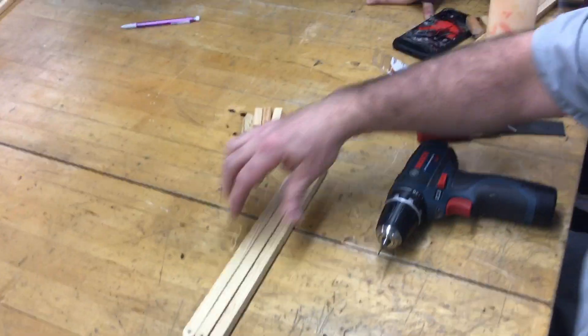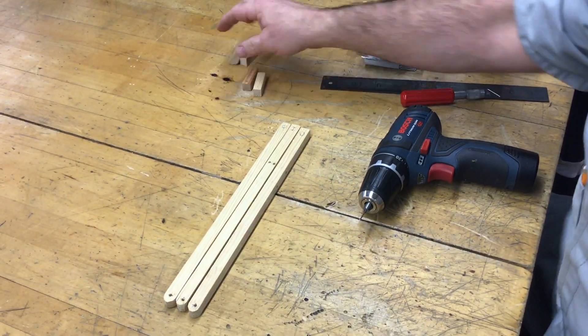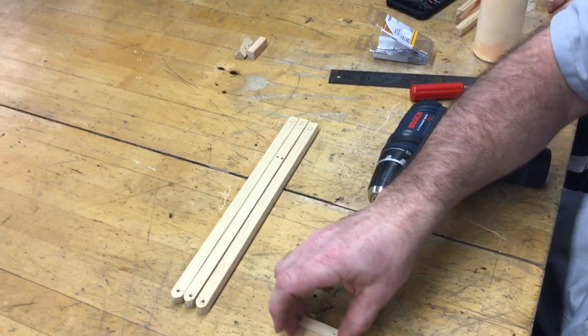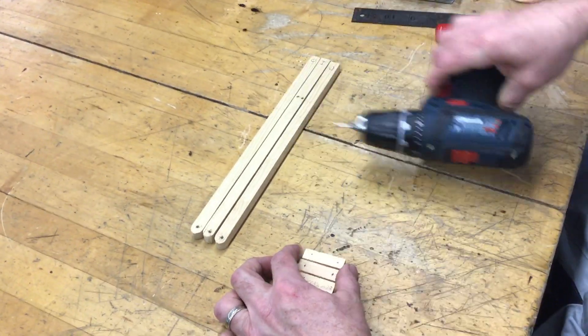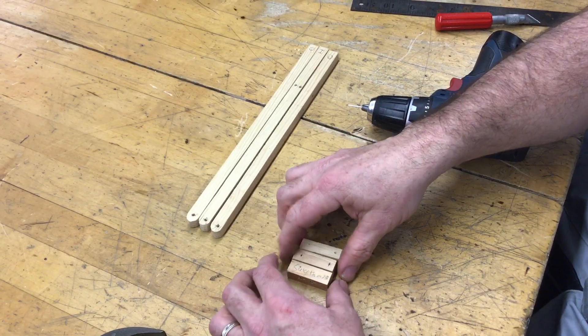All right, so you have all your pieces, everything is drilled. You're going to pre-drill all four of the little ones with the hand drill. This is just pilot holes so we don't split the wood.